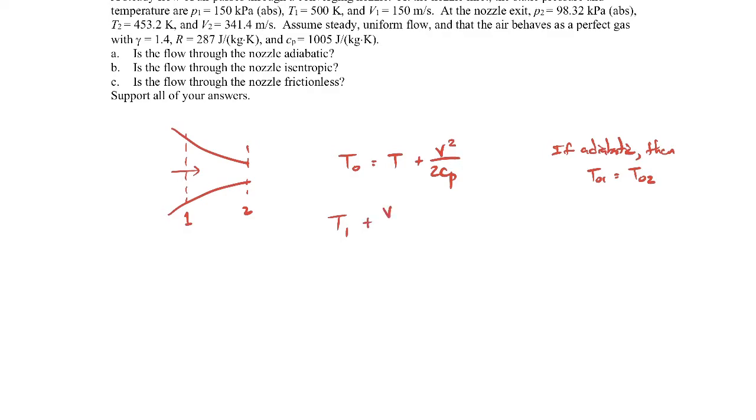We can check to see if the stagnation temperature at one equals the stagnation temperature at two. We're given enough information here, we can substitute in. We're told T₁, V₁, T₂, V₂, and we have the specific heat at constant pressure. When you work out the numbers, T naught one does in fact equal T naught two. They come out to be about 511 Kelvin. Therefore, the flow is indeed adiabatic.